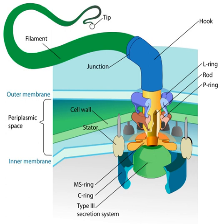The bacterial flagellum is made up of the protein flagellin. Its shape is a 20-nanometer thick hollow tube. It is helical and has a sharp bend just outside the outer membrane. This hook allows the axis of the helix to point directly away from the cell. A shaft runs between the hook and the basal body, passing through protein rings in the cell's membrane that act as bearings. Gram-positive organisms have two of these basal body rings, one in the peptidoglycan layer and one in the plasma membrane. Gram-negative organisms have four such rings: the L ring associates with the lipopolysaccharides, the P ring associates with the peptidoglycan layer, the M ring is embedded in the plasma membrane, and the S ring is directly attached to the plasma membrane. The filament ends with a capping protein. The flagellar filament is the long, helical screw that propels the bacterium when rotated by the motor through the hook.